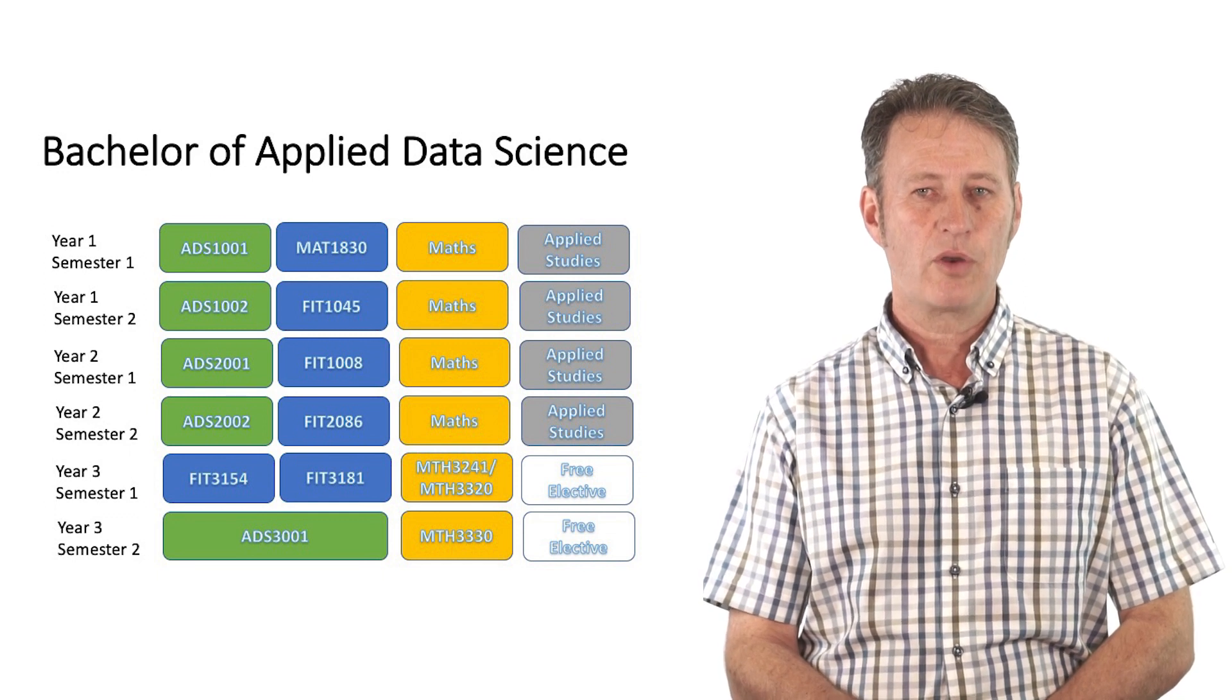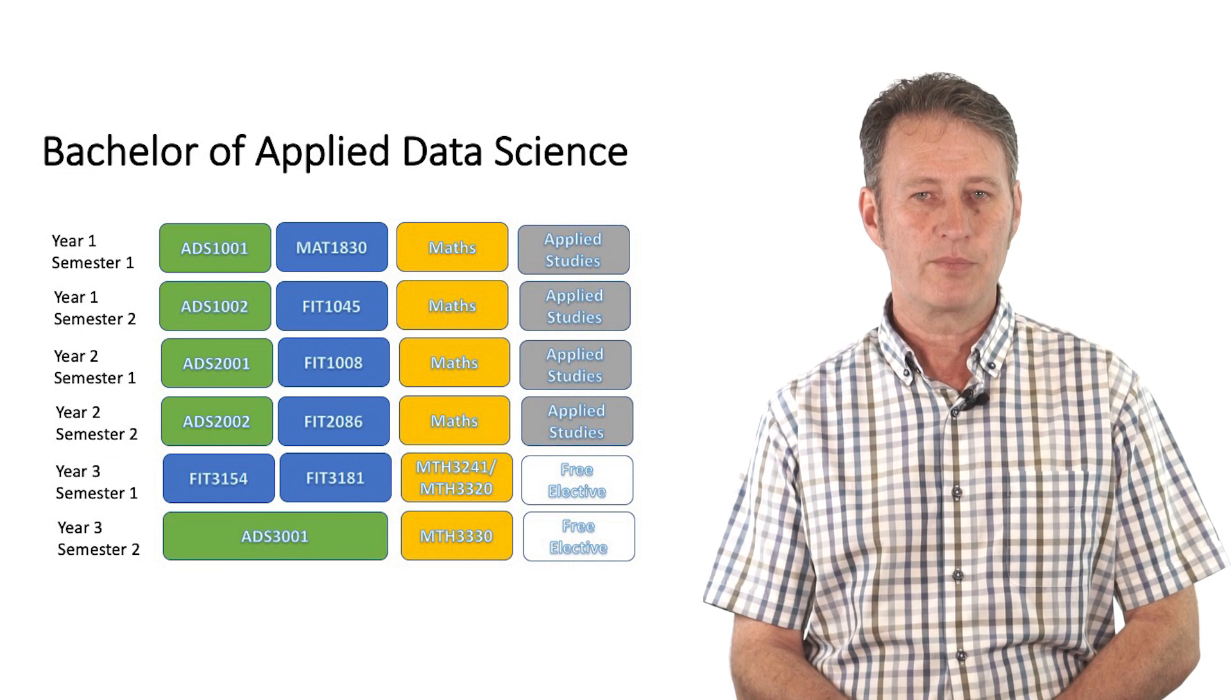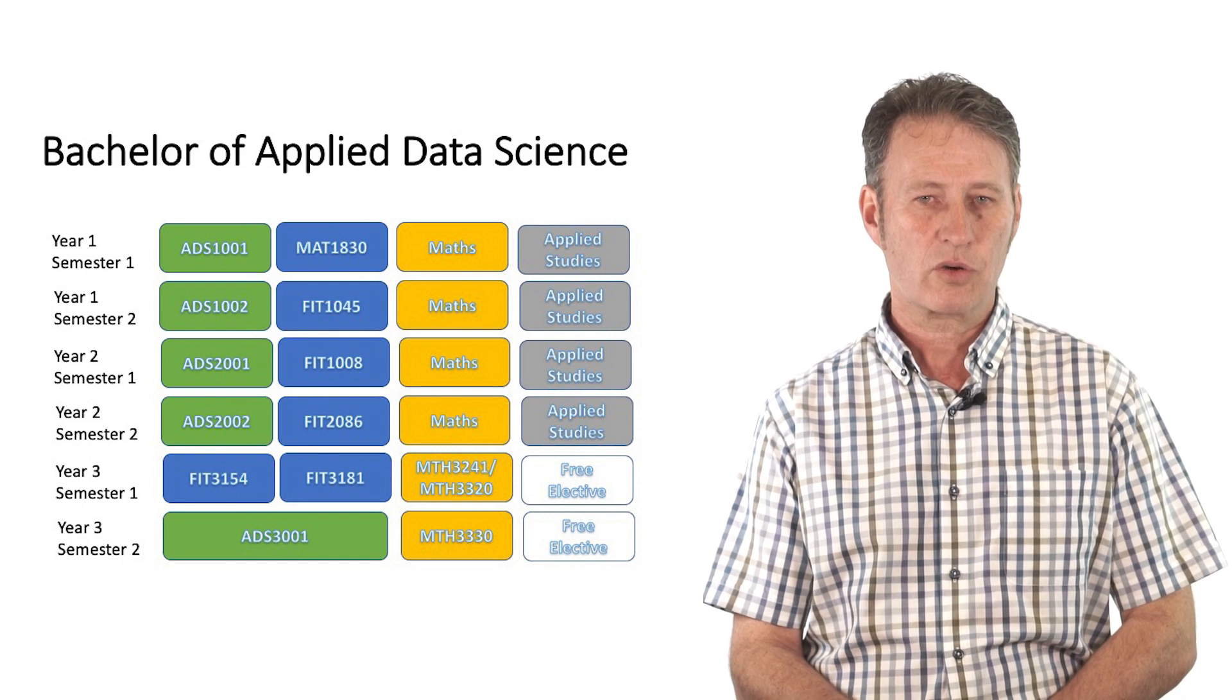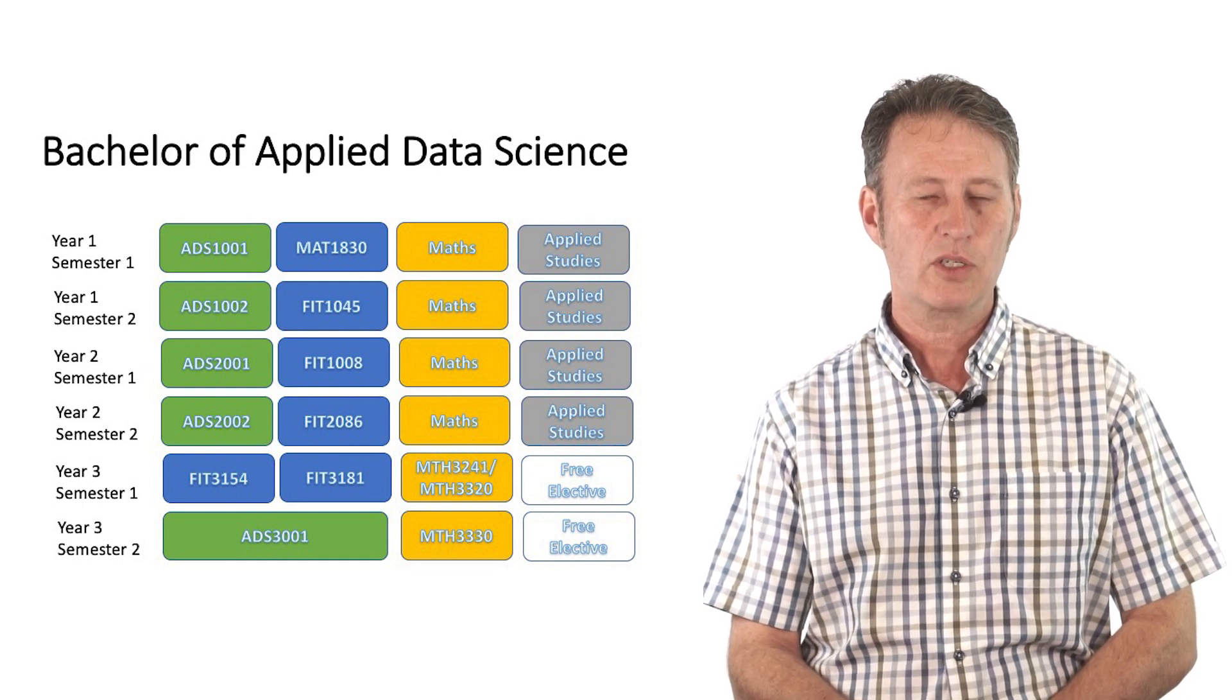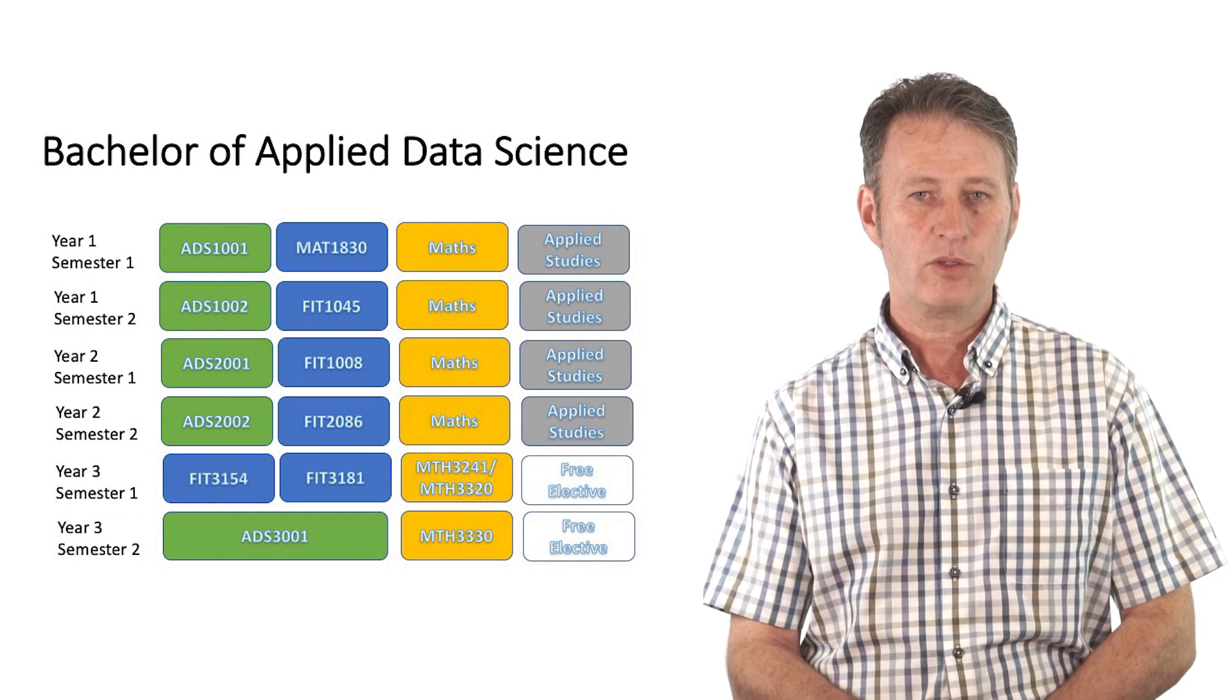The second stream of units shown in blue are those which are taught by the Faculty of IT. In your first year, you will be taking MAT 1830, Discrete Mathematics for Computer Science, and FIT 1045, Programming Fundamentals in Python.